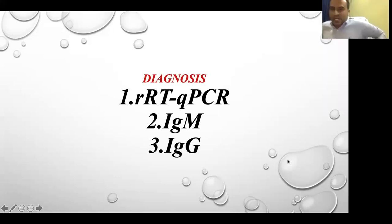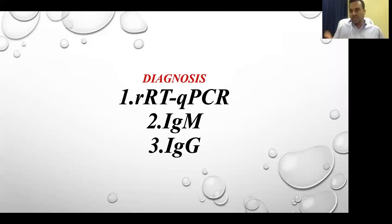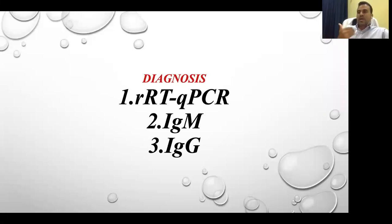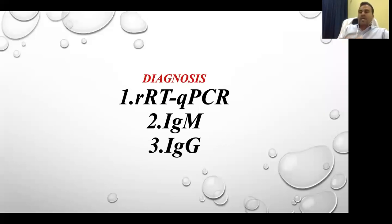Now moving to the most important part — diagnosis. Many doctors are confused about which swab is taken, where blood is taken, how the rapid test works, and how the PCR is done. The basic tests for SARS-CoV-2 and COVID-19 are: RT-QPCR, IgM, and IgG. RT-QPCR stands for Real-Time Reverse Transcriptase Quantitative Polymerase Chain Reaction — simply called the PCR test. IgM is immunoglobulin M and IgG is immunoglobulin G.